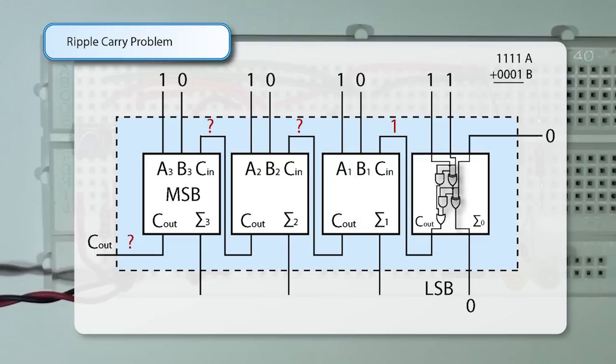So here we see that 1 plus 1 plus 0, which is the carry in, gives us a sum of 0 and a carry out of 1, which is passed to the next full adder. The same happens again in the next full adder and in the next and in the next. Now the problem with this is that there's a delay.